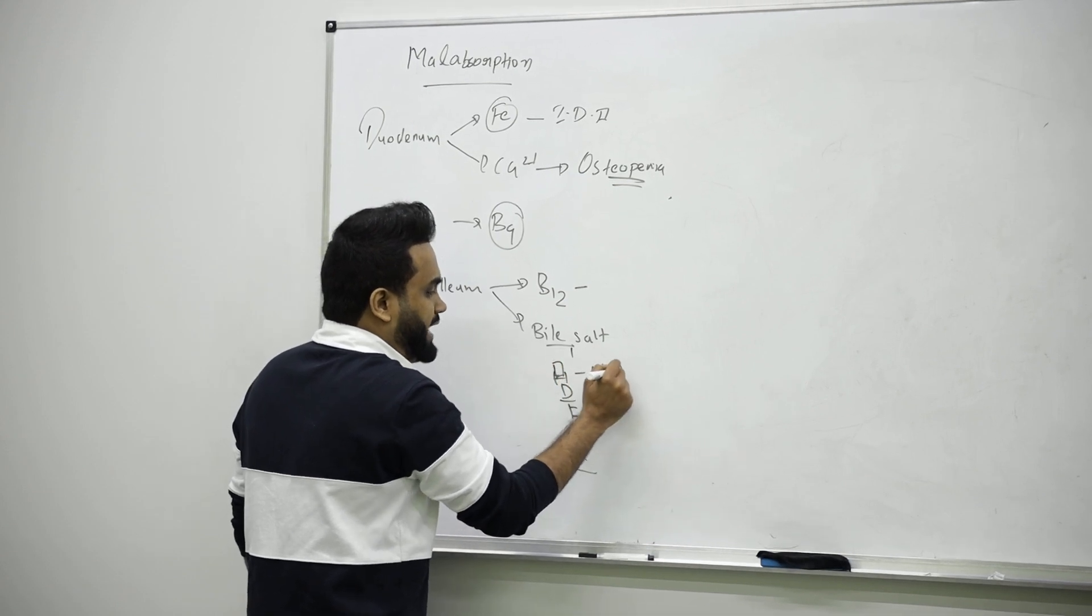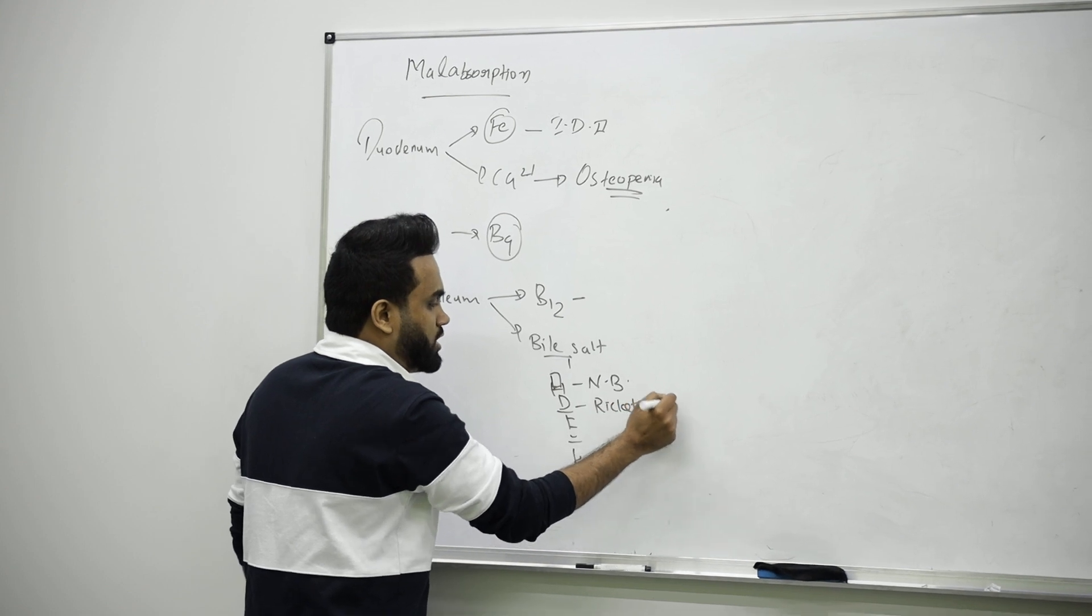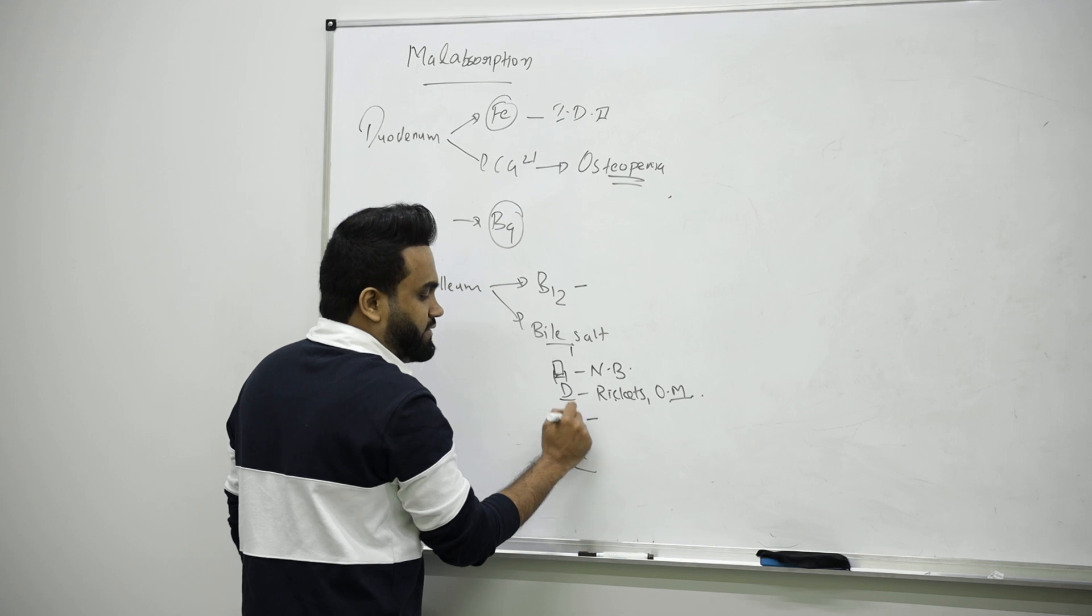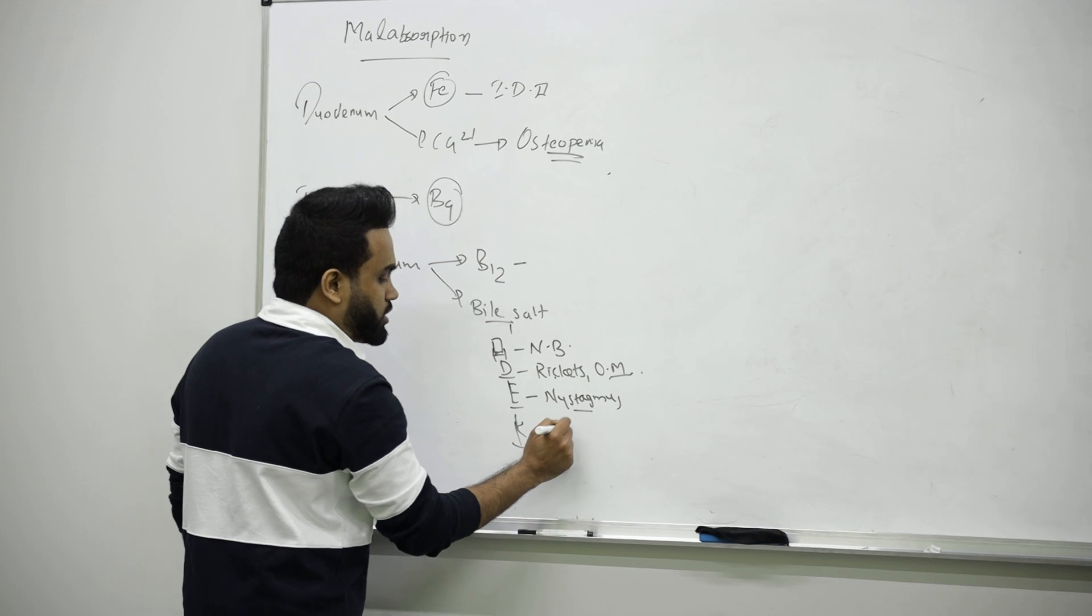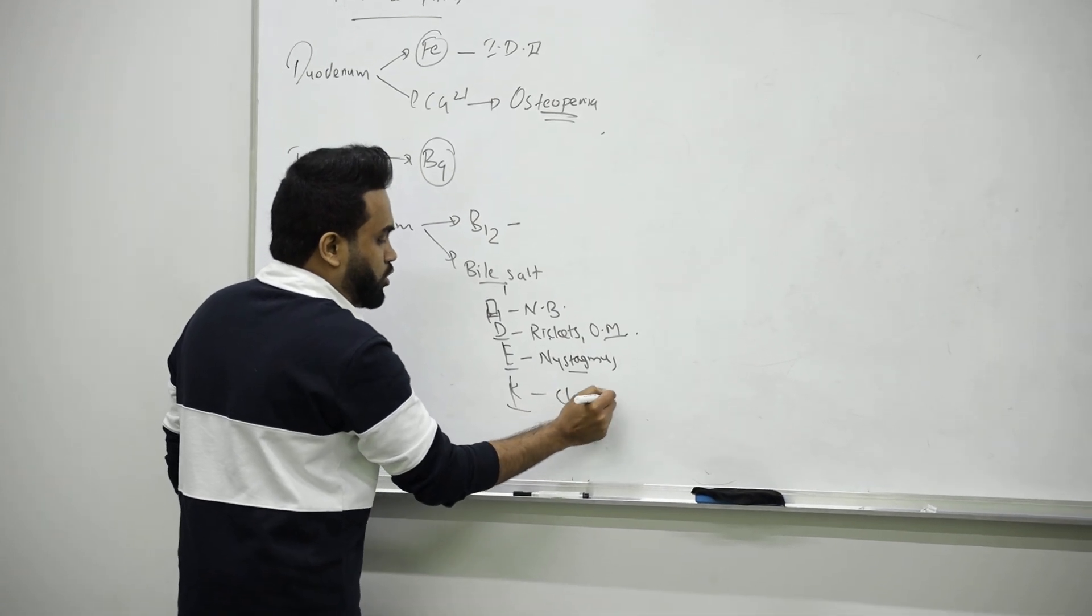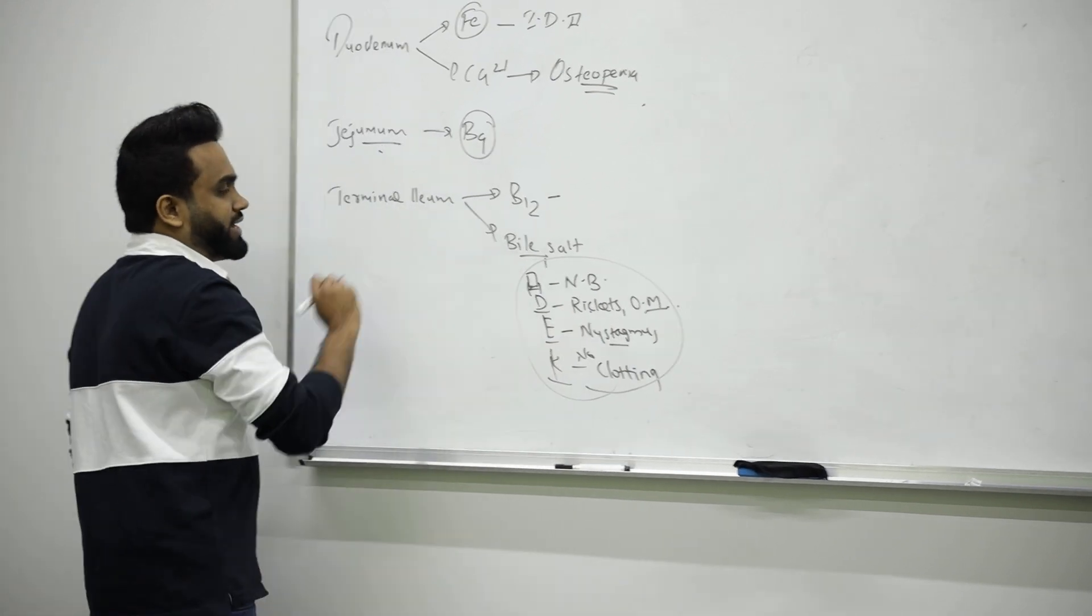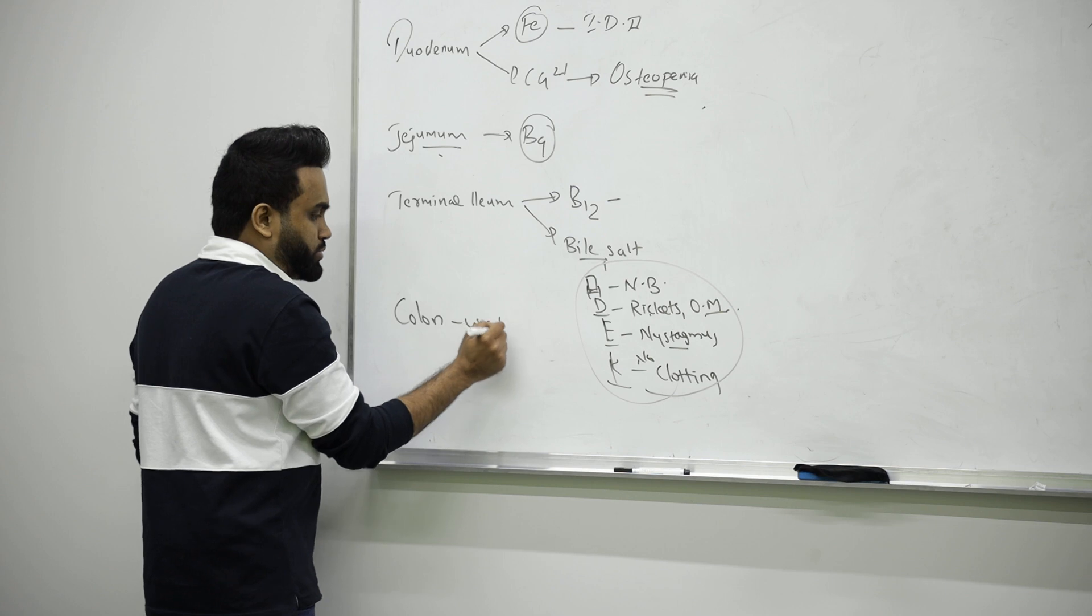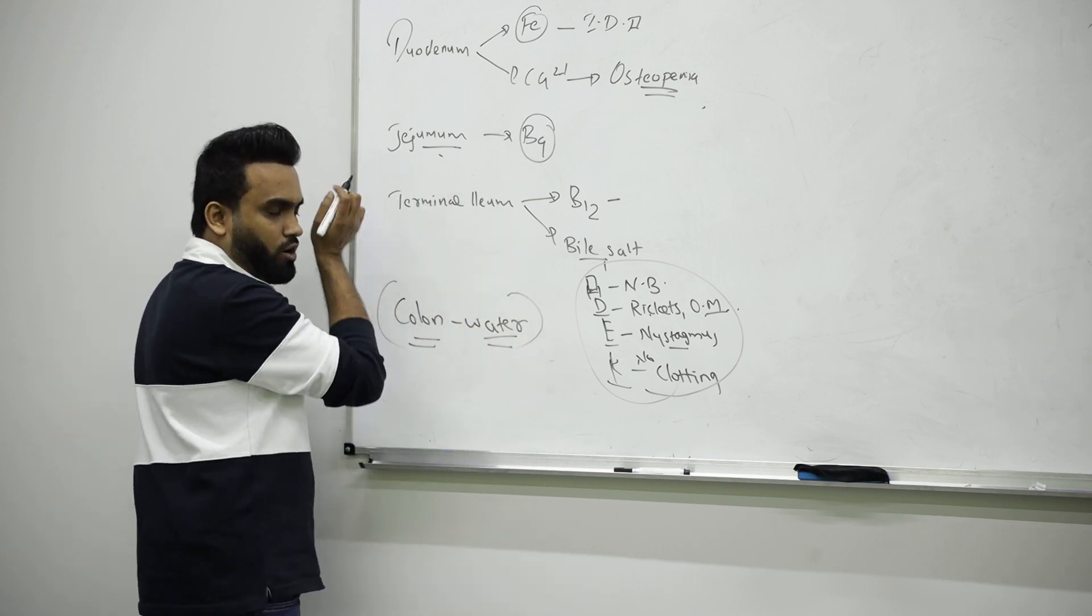Vitamin A deficiency will cause night blindness, D will cause rickets or osteomalacia in adults, E will cause nystagmus or infertility, and K is for clotting, so there will be no clotting if there is deficiency. Accordingly, you can connect. Then we have colon, which is responsible for water absorption.